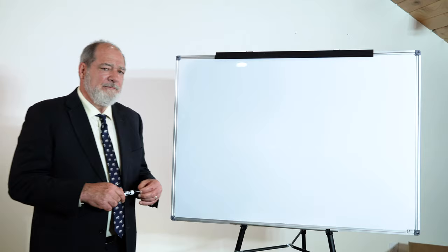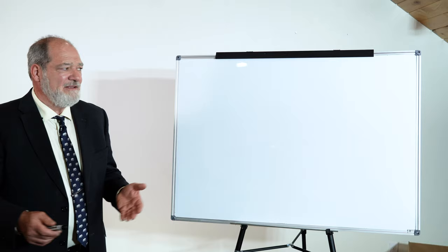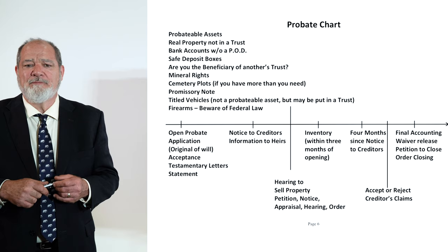To avoid probate, the tool we normally use, and there are other exceptions, are trusts. We use trusts for two purposes: to avoid probate and to maintain your privacy. On the next slide coming up that says probate chart, you're going to see across the top what are the probatable assets, and across the bottom some of the highlights of a probate.